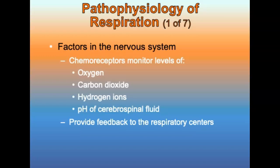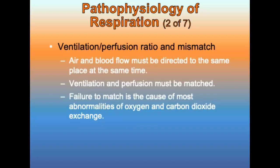Now let's talk about the pathophysiology of respirations. Chemoreceptors monitor levels of oxygen, carbon dioxide, hydrogen ions, and the pH of cerebrospinal fluid and provide feedback to the respiratory centers. Ventilation-perfusion ratio and mismatch: air and blood flow must be directed to the same place at the same time. Ventilation and perfusion must be matched. Failure to match ventilation and perfusion is the cause of most abnormalities of oxygen and carbon dioxide exchange.